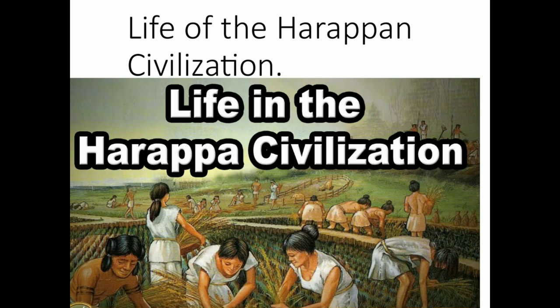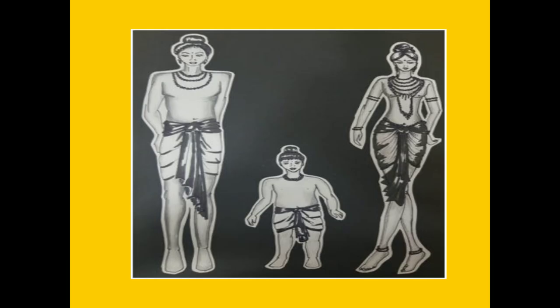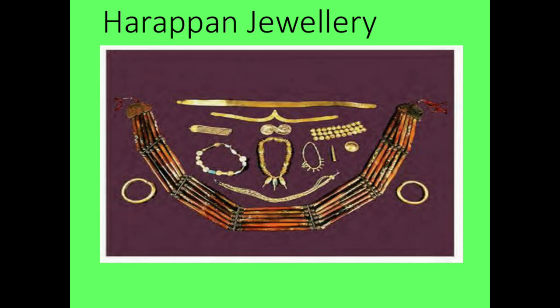Statues, pictures on seals, and remains of cloth from excavations indicate that Harappan people used to weave cloth. Both men and women are considered to have worn dress up to their knee length, and an upper garment to cover their bodies.